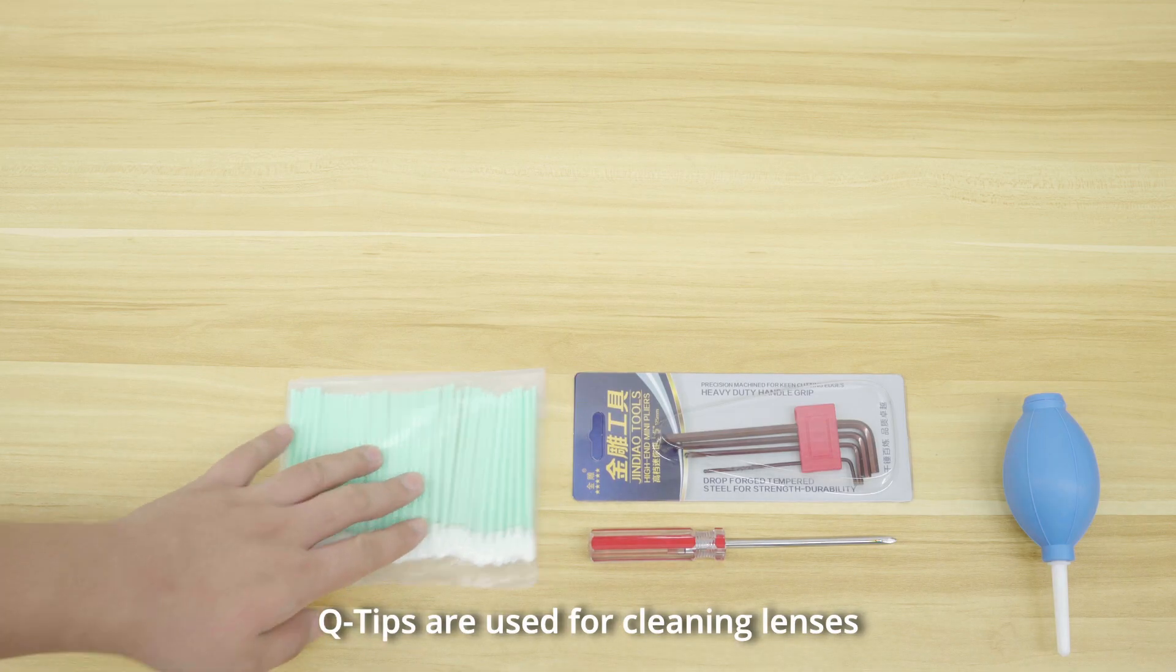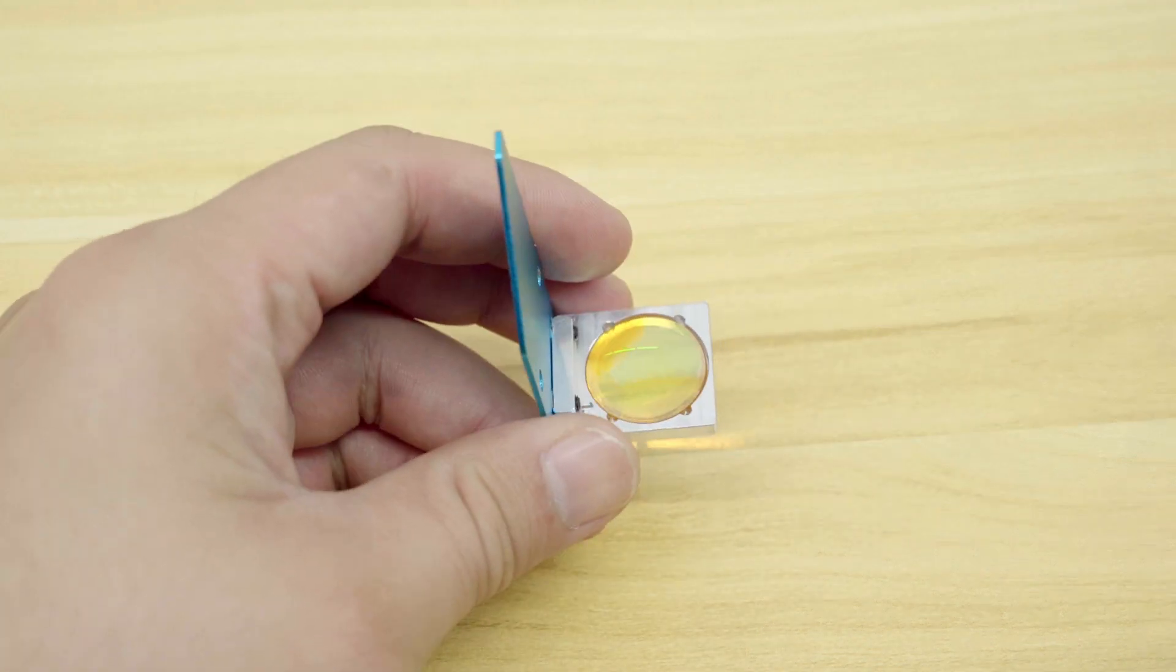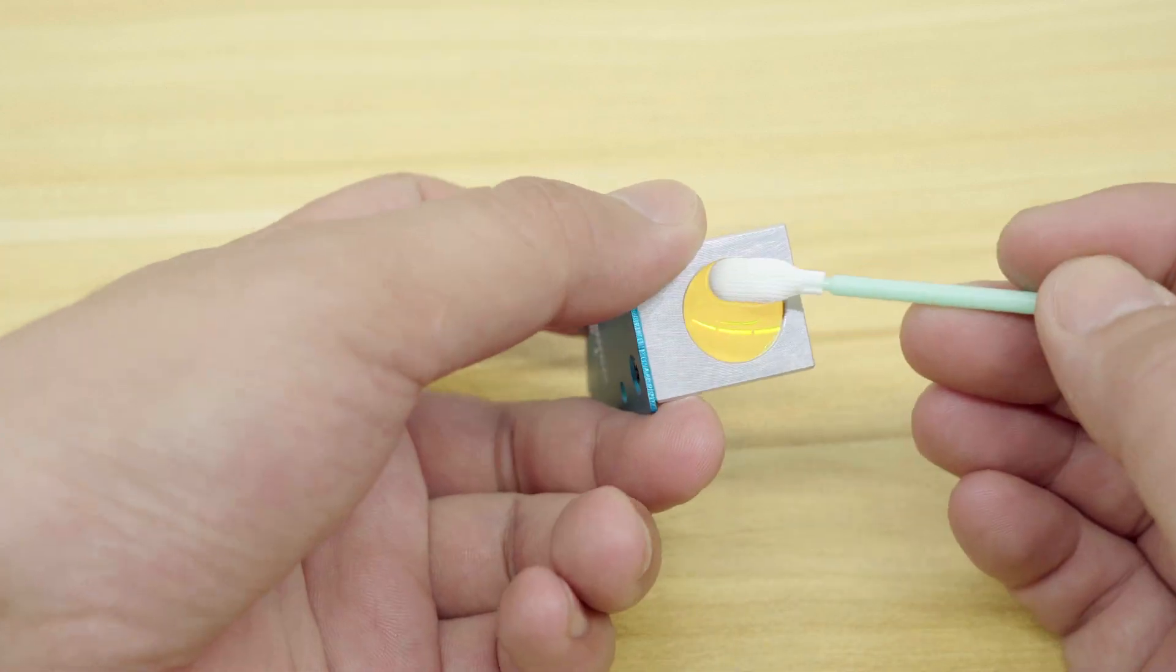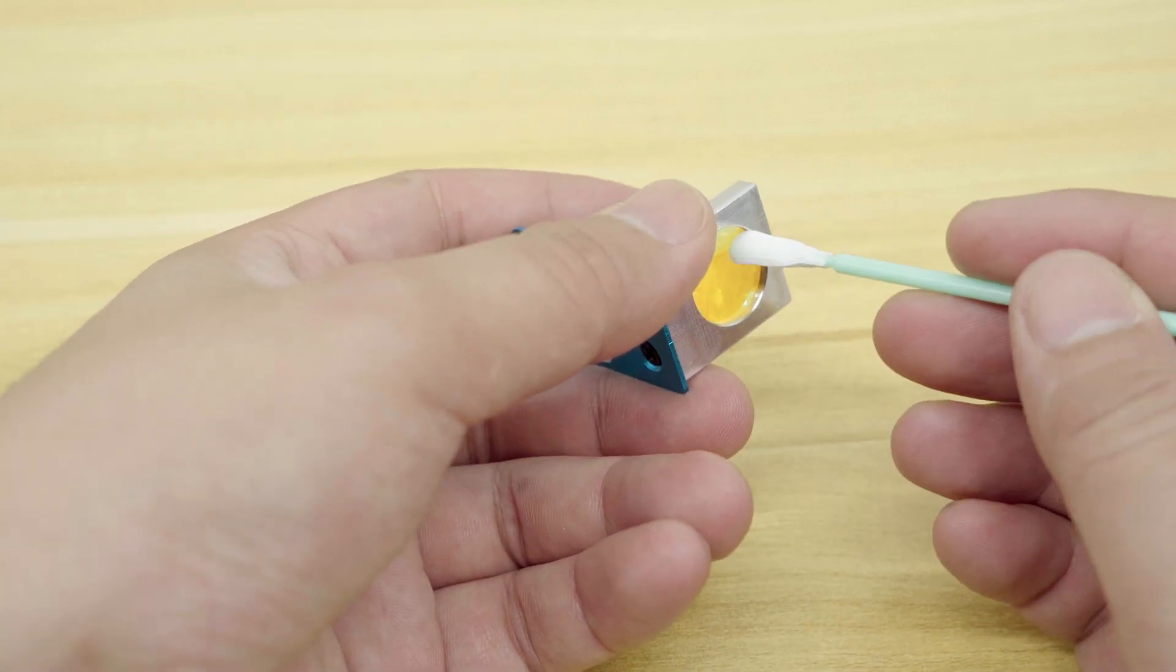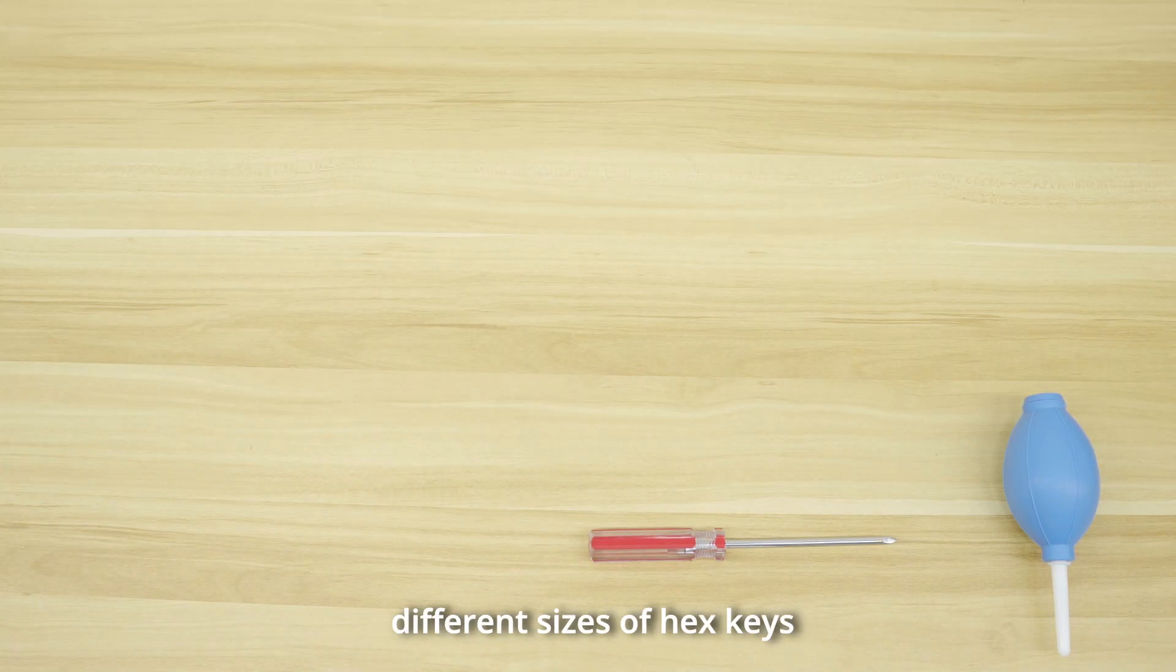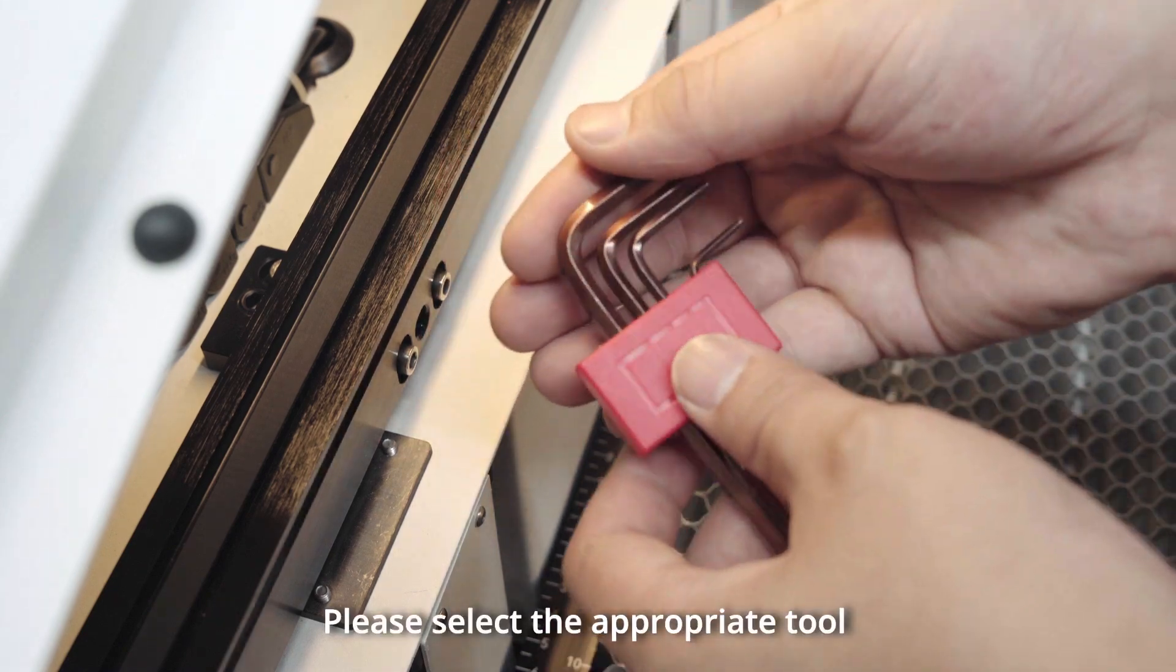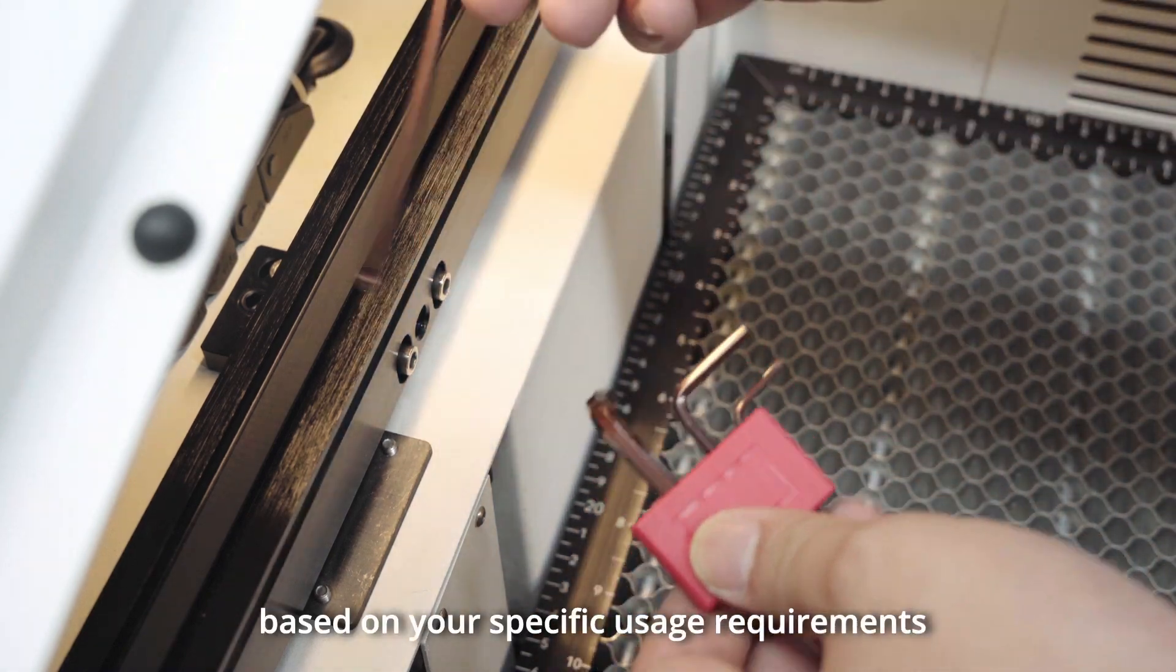Q-tips are used for cleaning lenses. The screwdriver set includes four different sizes of hex keys and one Phillips screwdriver. Please select the appropriate tool based on your specific usage requirements.